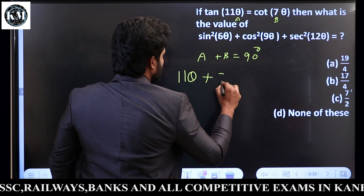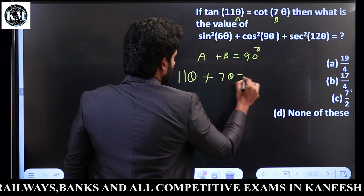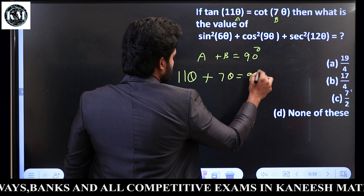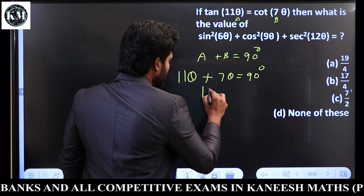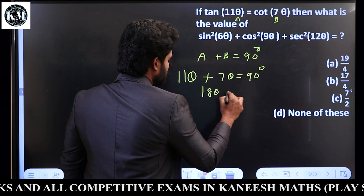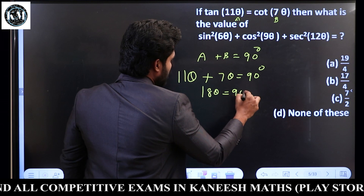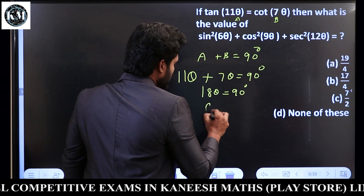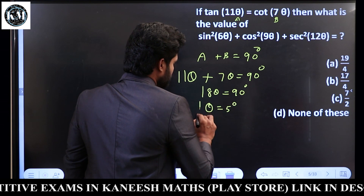So 11θ plus 7θ equals 90 degrees. We add the two values: 11θ plus 7θ is 18θ, which equals 90 degrees. So θ equals 5 degrees.